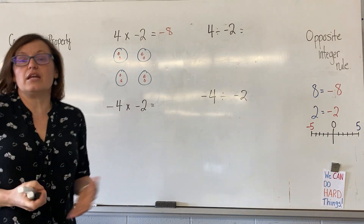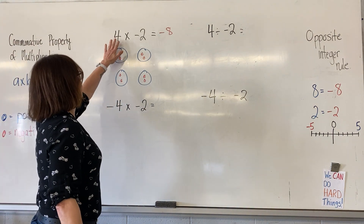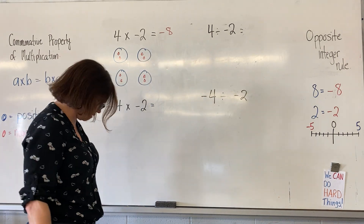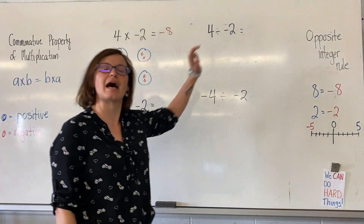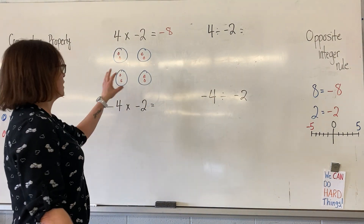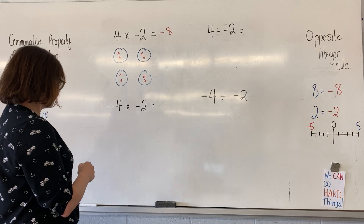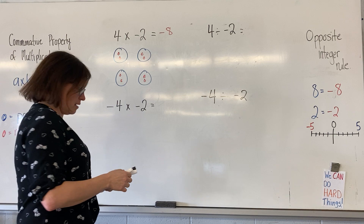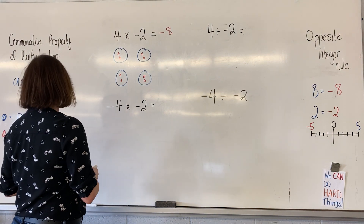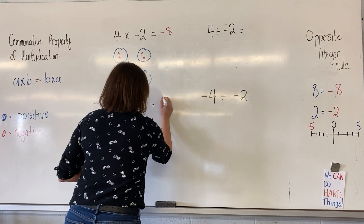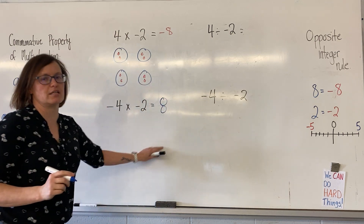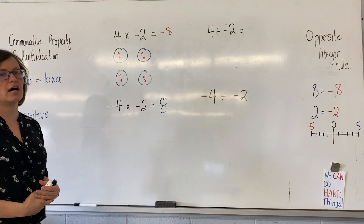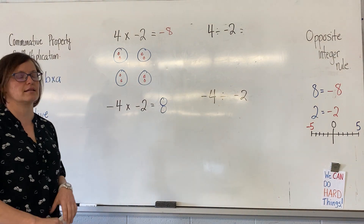Now, we know that four multiplied by two gets us eight. What we're trying to figure out is if the answer is going to be positive or negative. So as we move through this, I want you to see if you can sense a pattern in the multiplication and division answers. Negative four multiplied by negative two is going to equal positive eight. I'm going to leave this and come back to a representation to show why it is positive eight.